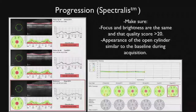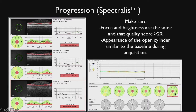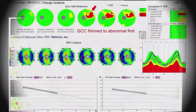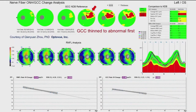With the Heidelberg Spectralis, you have a serial analysis, so you're looking for change over time in a series of scans in this sort of graph and in these values taken from different days that the patient is scanned. Unfortunately, there's not a statistical program telling you whether or not that change is statistically significant — it's up to the clinician to decide whether or not the change is clinically significant.